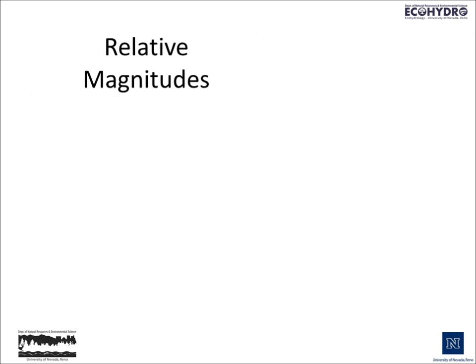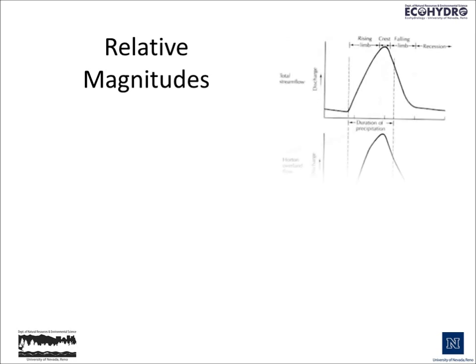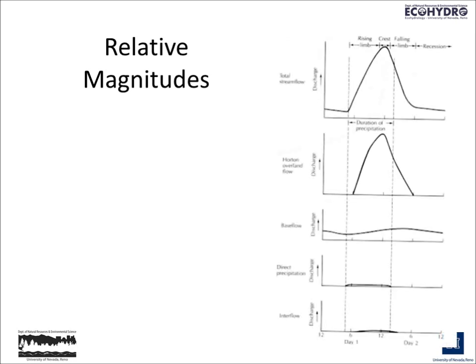Let's look at the relative magnitudes of the processes that contribute to a discharge hydrograph. On the very top, we have a total stream flow hydrograph with nothing separated out. This would be a typical hydrograph that we might see following some kind of precipitation event — a storm or snow melt. We have our rising limb, we have our crest, we have our falling limb, and then the recession part of the hydrograph, during which the processes all return to normal after having been changed by the addition of precipitation.